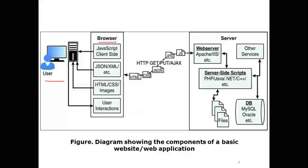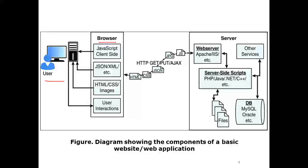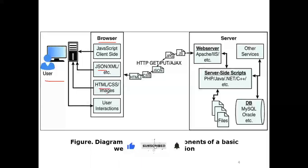There are different ways to talk with the browser. For static interaction with the client, we can use JavaScript, which is a client-side scripting language. We can also interact with JSON — JavaScript Object Notation — or XML, extendable markup language. Another way is with HTML, CSS, images, or other elements.